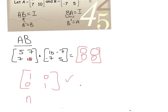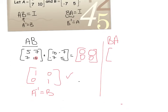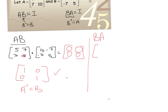I know that A inverse is equal to B, so B is the inverse of A. What about the other way around? If they're inverses of each other, it'll work this way also. So that means I'm just going to flip-flop the order. I get 10, negative 7, negative 7, 5 — and then I multiply that by 5, 7, 7, 10. This is B and this is A.